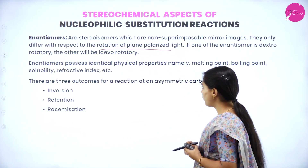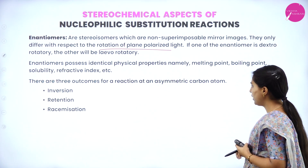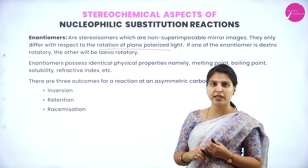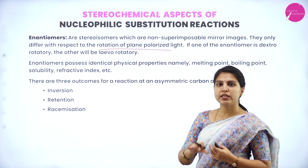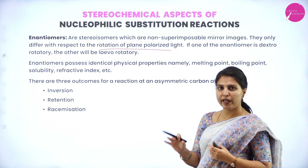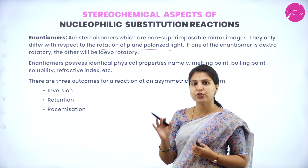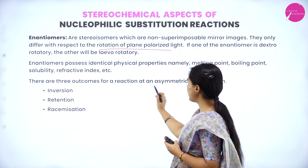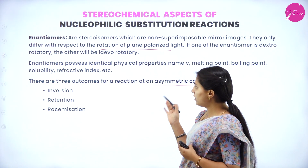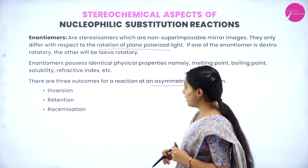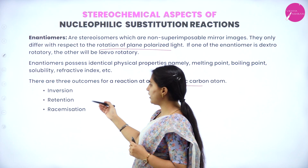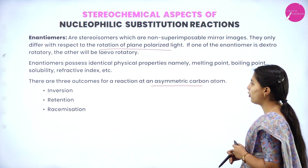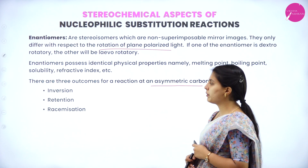There are three outcomes for a reaction at any asymmetric carbon atom. We know that an asymmetric carbon is a carbon having a valency of four, where all four sides have different substituents. There are three outcomes from an asymmetric carbon: inversion, retention, and racemization.